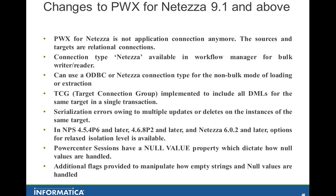If you are migrating to different versions of Netezza — specifically 4.5.436 and later, 4.6.8P2, and Netezza 6.0.2 and later — they have provided a relaxed isolation level for serialization. When they say relaxed isolation level, they make it a repeatable read. Before, it used to have a table-level lock; now you can force it to have a row-level lock. In spite of that, you might still encounter some issues, which we will address later in this presentation.